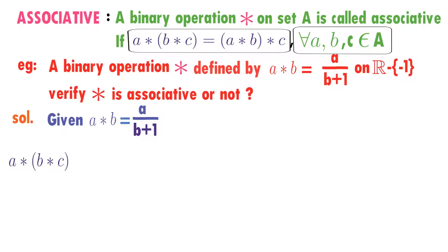I will calculate A★(B★C). Observe what is there in brackets — B★C. So A is as usual, star. I will write what is B★C. B is the first element, C is the second element. B★C is first element B divided by second element C plus 1.